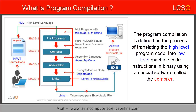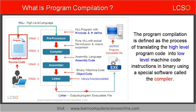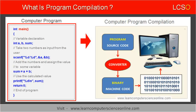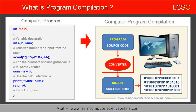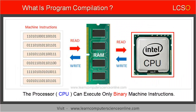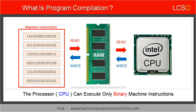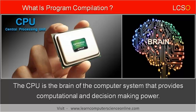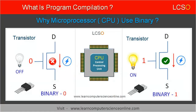Program compilation is defined as the process of translating the high-level program source code into the low-level machine code instructions in binary. The program source code is compiled using a special system software called the compiler. The computer, due to its hardware architecture, can execute only binary machine instructions. The processor CPU is the brain of the computer.